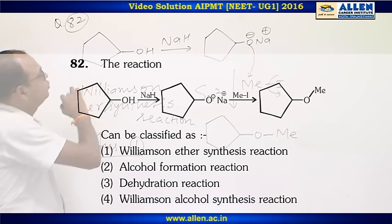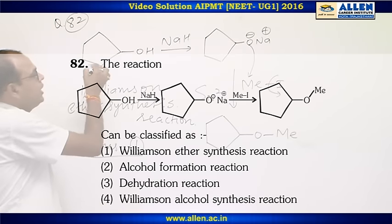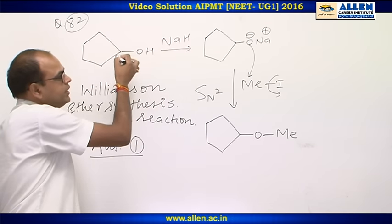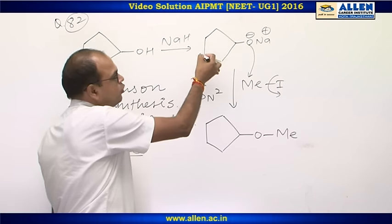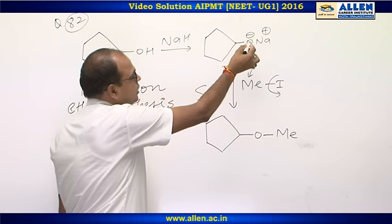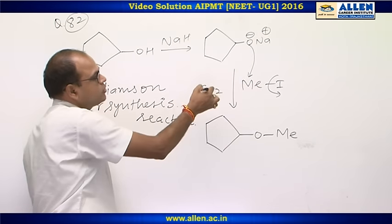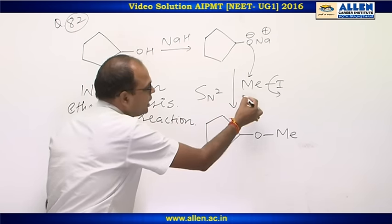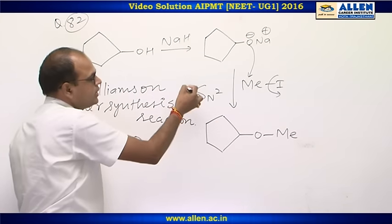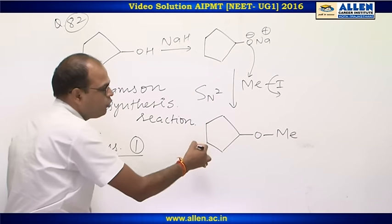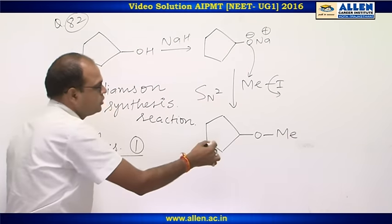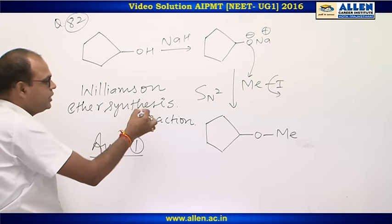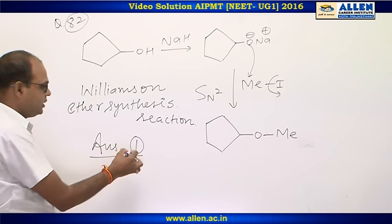Question number 82: In this reaction, alcohol when reacted with a strong base like sodium hydride, an acid-base reaction takes place, forming a salt like sodium cyclopentoxide. This is also a nucleophile. When it reacts with an alkyl halide like a primary alkyl halide, an SN2 reaction takes place and an ether is formed as a product. This reaction is called Williamson ether synthesis. So the answer is 1.